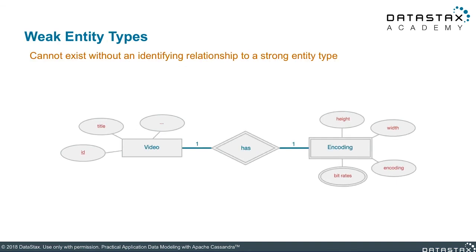Here's an example of a weak entity type — notice the double outlines. Don't make these more complicated than they need to be. In order for a weak entity object to exist, the parent object must also exist. For example, video has encoding. If the video disappears, then the encoding disappears with it. That's really all there is to it. Are you ready to hit the whiteboard? In this exercise, we have a data model that we need your help filling in.